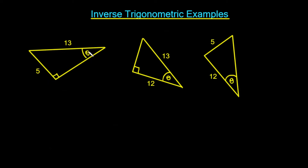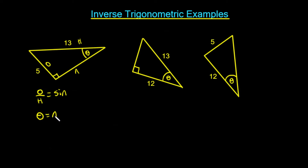You can see the angle here, and the length opposite that angle is the opposite side. The other leg must be the adjacent and the longest side is the hypotenuse. In this case we're using the ratio of opposite over hypotenuse, which is the sine function. So the angle theta is going to equal the arc sine of the ratio 5 divided by 13.